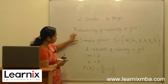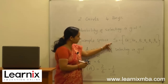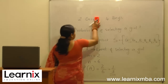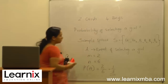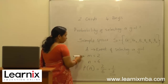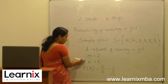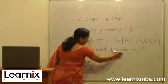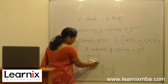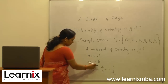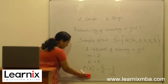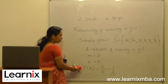To summarize: first we define the sample space S, which includes two girls and four boys. A is defined as the event of selecting a girl. We find m, the number of favorable cases for getting a girl, which is two, and n, the total number of elements in the sample space S, which is six. Therefore, P of A is m by n, which is two by six, equal to one by three. This method of finding the probability is called the classical or mathematical approach.